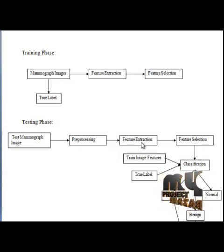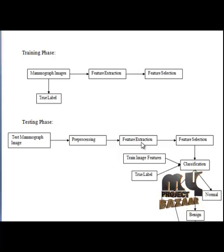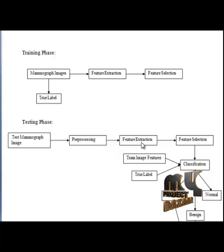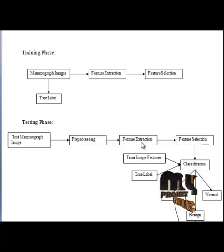For feature extraction, we are using the GLCM algorithm. Some texture features are extracted according to the statistics of the gray-level co-occurrence matrix. A co-occurrence matrix, also referred to as a co-occurrence distribution, is defined over an image as a distribution of co-occurring values at a given offset. It represents the distance and angular spatial relationship over an image sub-region of specific size. The GLCM is created from a grayscale image and calculates how often a pixel with a gray-level value occurs horizontally, vertically, or diagonally to adjacent pixels.